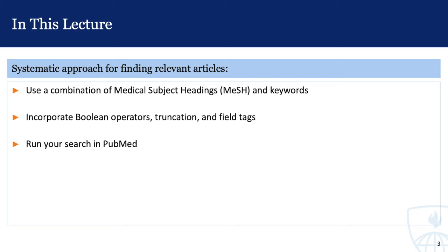You'll learn how to use a combination of medical subject headings (MeSH) and keywords in your search, incorporate search techniques such as Boolean operators, truncation, and field tags, and run your search in PubMed one concept at a time. This approach is best suited for developing a comprehensive search such as the one you might use for a literature review. Let's get started.